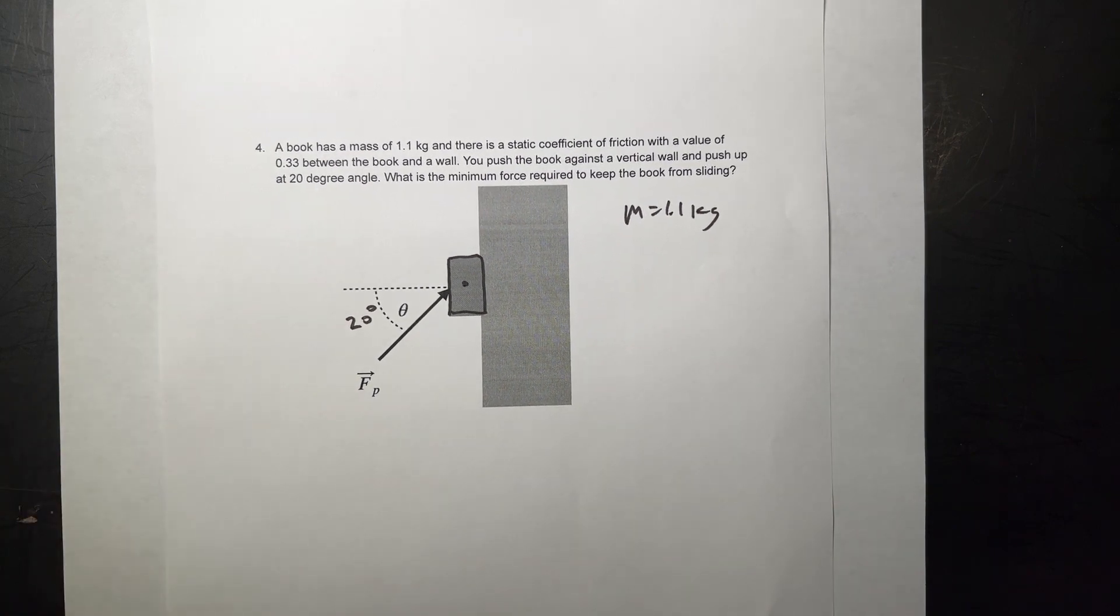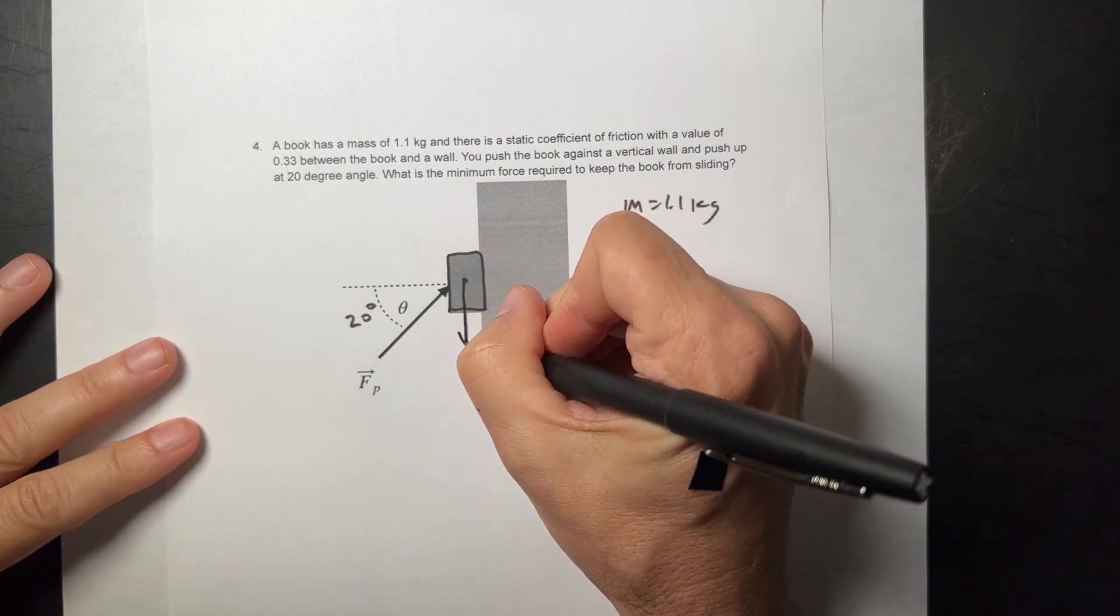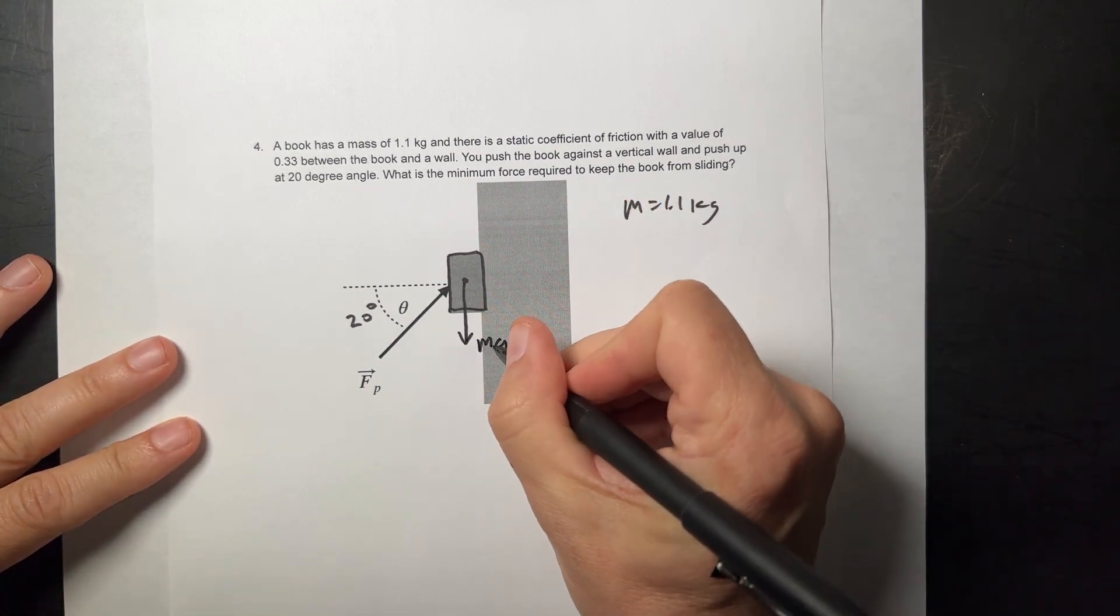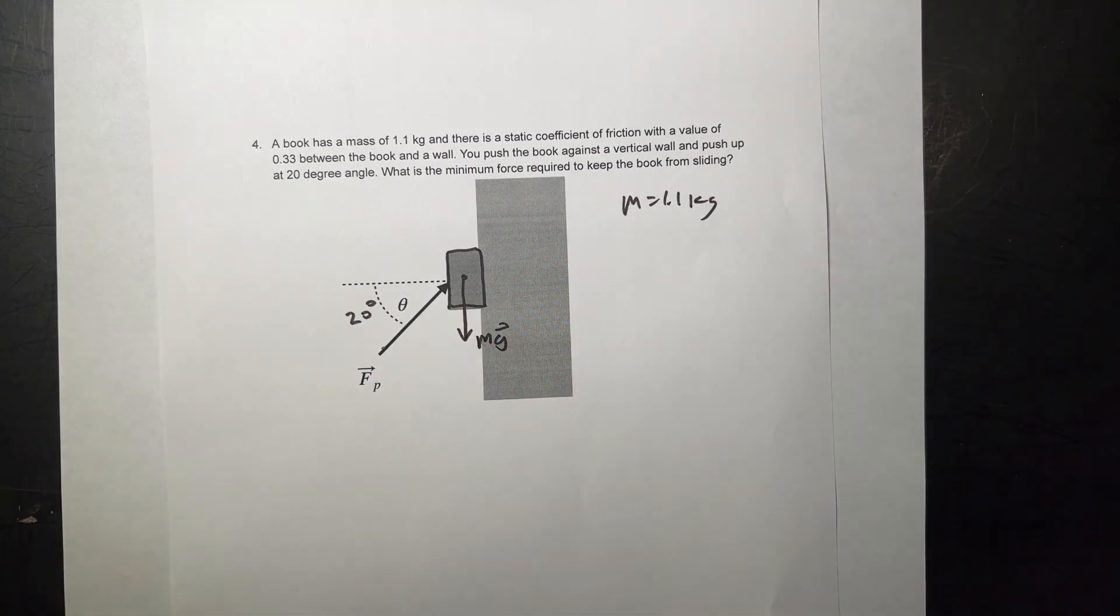So there are 1, 2, 3, 4 forces that we're going to need to consider. The first one that people like to put in there is the gravity. So there's a gravitational force. We'll just call that mg pointing down. And then I have this force already, the push force, FP. So that's two of them.